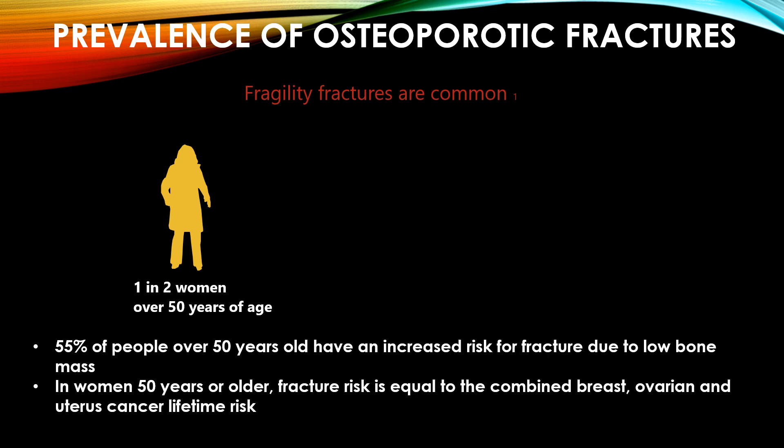Looking at the prevalence of osteoporotic fractures: one in every two women over the age of 50 will have a fragility fracture, and one in five men over 50 will have a fragility fracture. 55% of people over 50 have increased risk of fracture due to low bone density — meaning nearly half of people over 50 have osteoporosis or at least osteopenia. In women 50 years or older, fracture risk equals the combined lifetime risk for breast, ovarian, and uterine cancer.